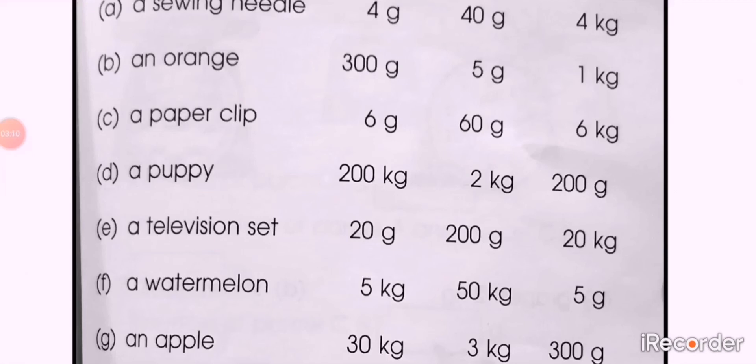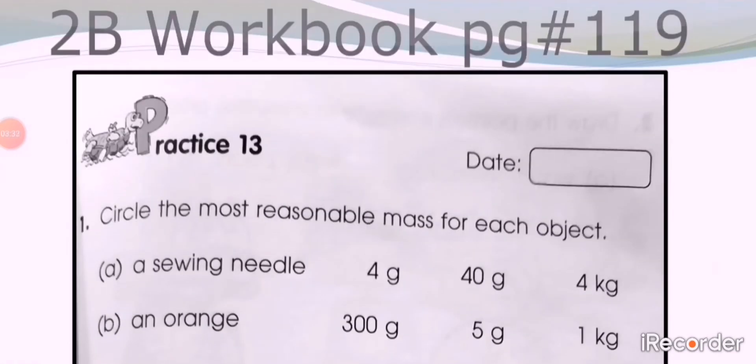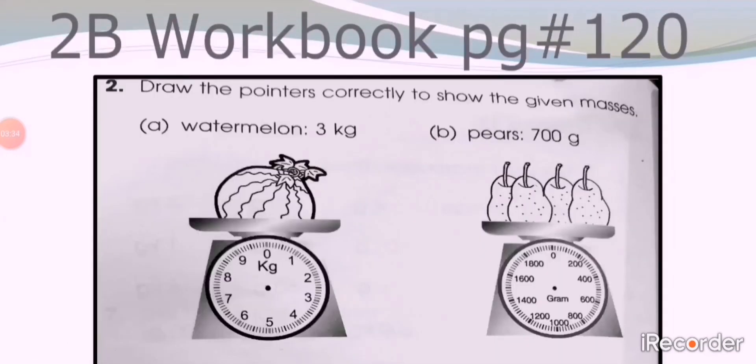Part G: an apple, again a fruit. Three options are here: 30 kg, 3 kg, and 300 grams. Remember that it's about only one apple, so select the suitable mass for apple and circle it. Next page, 2B workbook page number 120. Write classwork above.